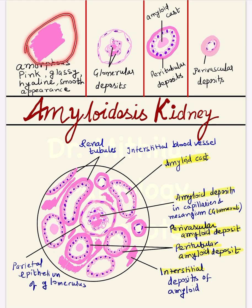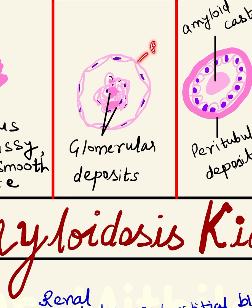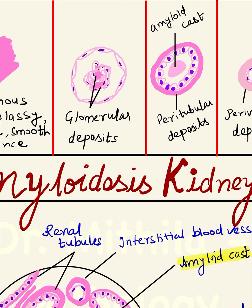We should know in which structures of the kidney this amyloid protein gets deposited. Mainly, first of all, there is deposit in the glomeruli. To draw the glomeruli, you make the outer parietal epithelial layer made up of flattened cells, and inside it you make the capillary tuft. In the tuft you make the endothelial cell nuclei and mesangial cell nuclei, and in between you make the pink amorphous eosinophilic deposits.